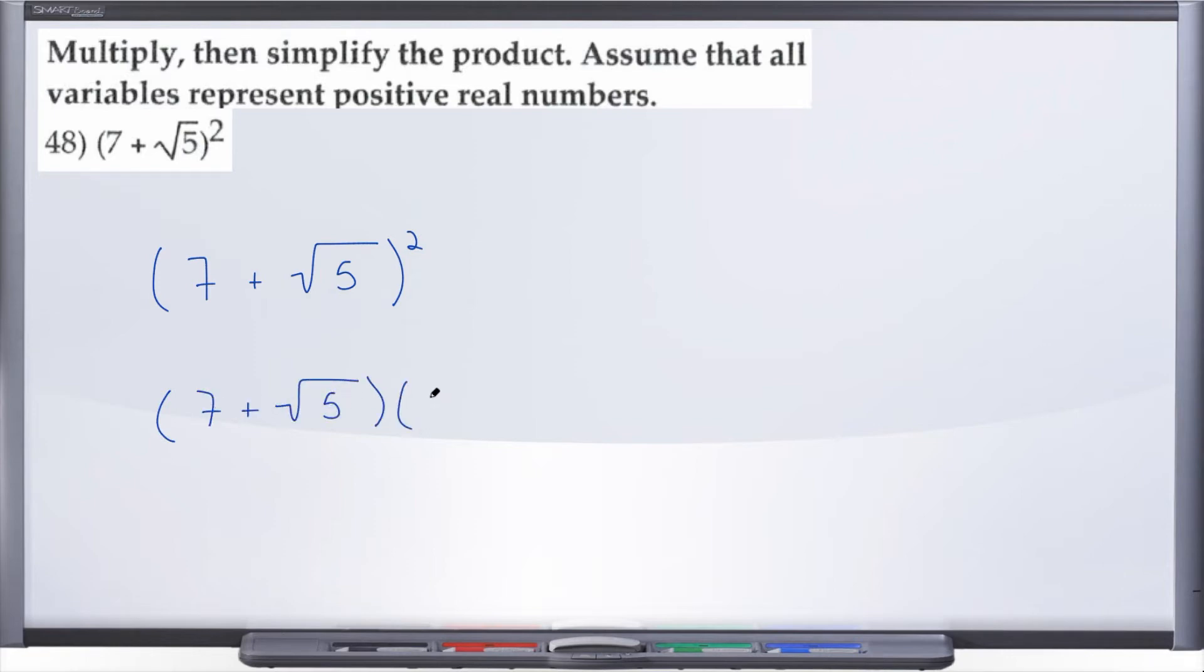So 7 plus radical 5, 7 plus radical 5, and now FOIL.